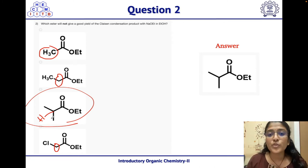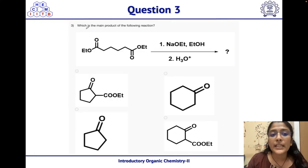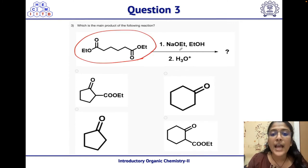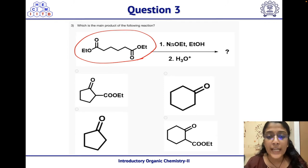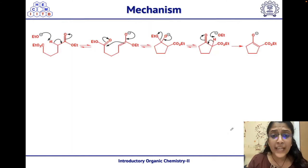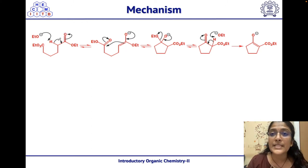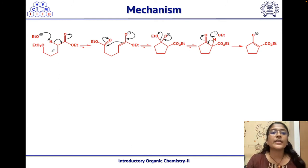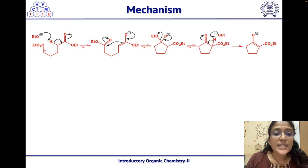Question 3: What is the main product of the reaction where a diester compound is treated with sodium ethoxide in ethanol followed by hydrolysis? This is a Dieckmann condensation reaction — an intramolecular Claisen condensation. Since both esters are identical, abstraction of an alpha hydrogen from either side gives a similar outcome. Ethoxide abstracts the alpha hydrogen, forming the enolate; the enolate attacks the other ester carbonyl intramolecularly.